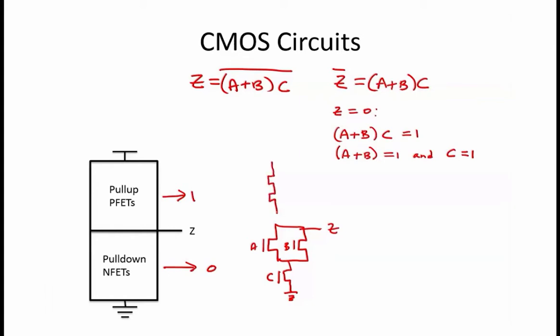To generate our pull-up, we simply replace parallel circuits with series and series with parallel. This will ensure that whenever our pull-down circuit is off, our pull-up circuit is on. So our pull-up circuitry is series AB in parallel with C. To convince ourselves that this is in fact the correct pull-up circuit...